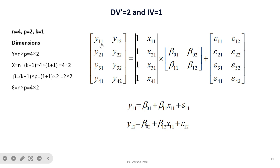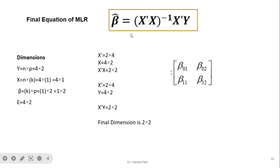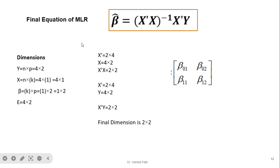For example, Y(1,1) equals beta(0,1) plus beta(1,1)·X(1,1) plus epsilon(1,1), and similarly for Y(1,2). The same equations used in multiple linear regression using matrix inverse can be applied here, because there is only a change in dimension. The formula is beta = (X'X)⁻¹ · X'Y, where X' denotes the transpose of X. This formula works whether the multivariate regression is simple or multiple.